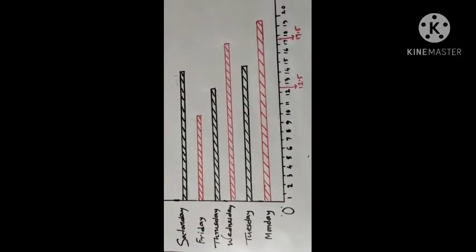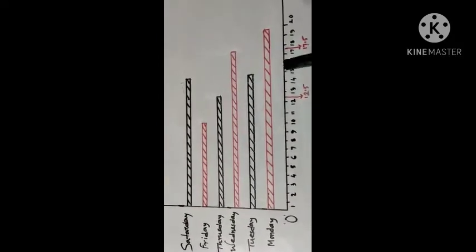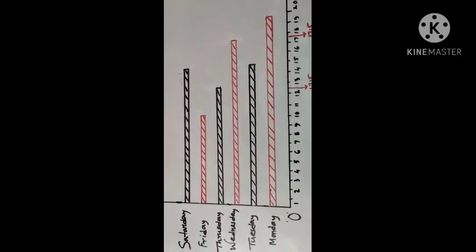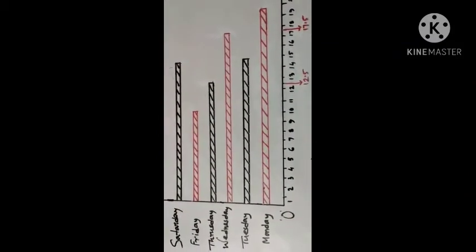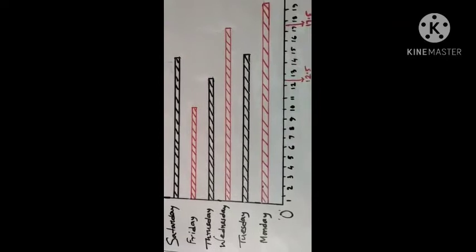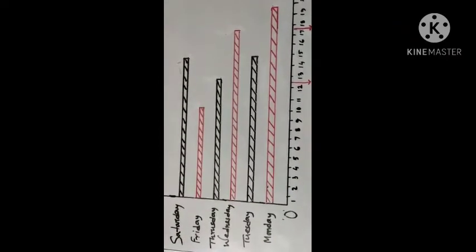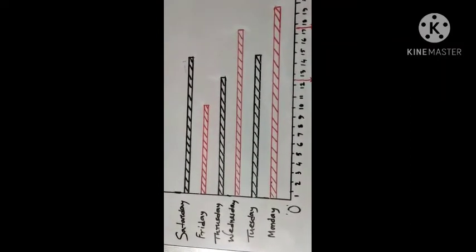Number 3: It is seen from the diagram that the length of the rectangle for Tuesday is between the length of Monday and Wednesday. Therefore, the number of bags sold on Tuesday is between that sold on Monday and Wednesday.